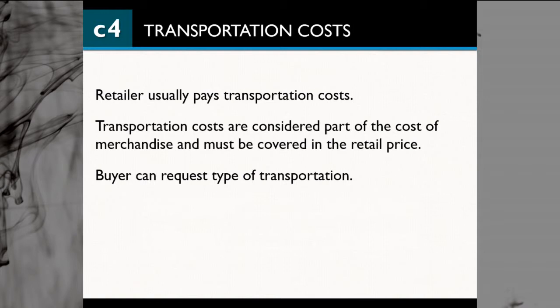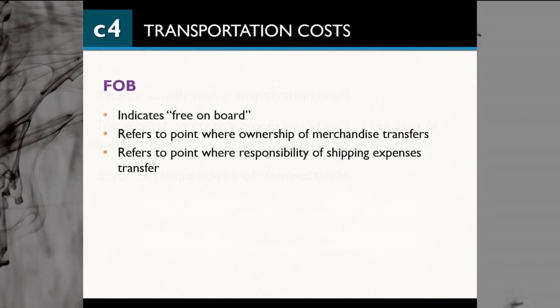Buyers can request types of transportation — what kind of carrier they want, like fast or slow — depending on the price. To understand transportation costs, we need to understand the concept of FOB. This term is something you will receive on your invoice.